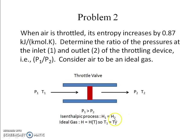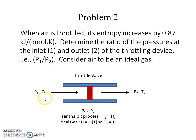Since ΔH = 0, we get h1 = h2 — throttling is an isenthalpic process. For an ideal gas, enthalpy is a function of temperature only, so constant enthalpy means T1 = T2; the upstream and downstream temperatures are equal. For a non-ideal gas with a negative Joule-Thomson coefficient, the downstream temperature would be lower, causing cooling — but for an ideal gas, temperature remains constant.